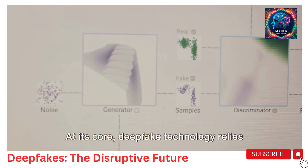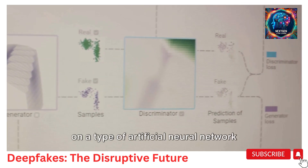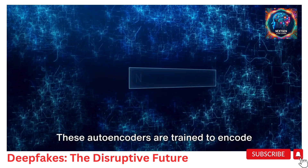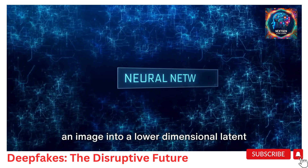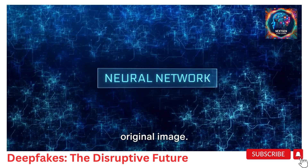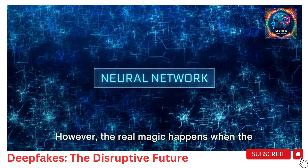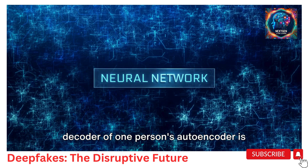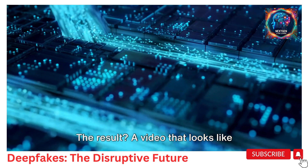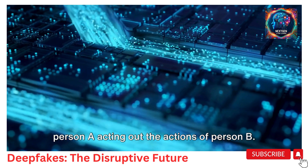At its core, deepfake technology relies on a type of artificial neural network known as auto-encoders. These auto-encoders are trained to encode an image into a lower-dimensional latent space and then decode it back into the original image. However, the real magic happens when the decoder of one person's auto-encoder is swapped with another's. The result? A video that looks like person A acting out the actions of person B.